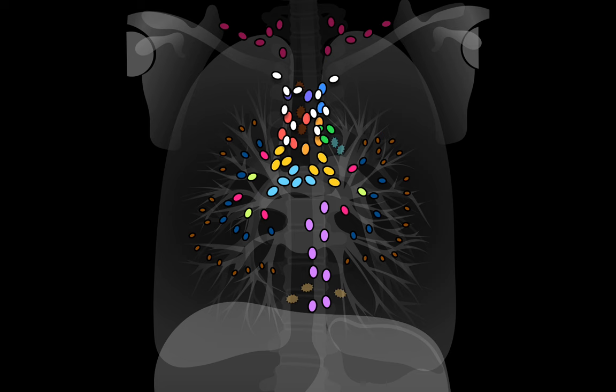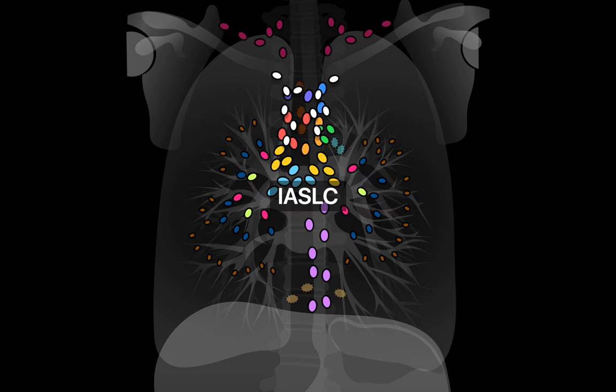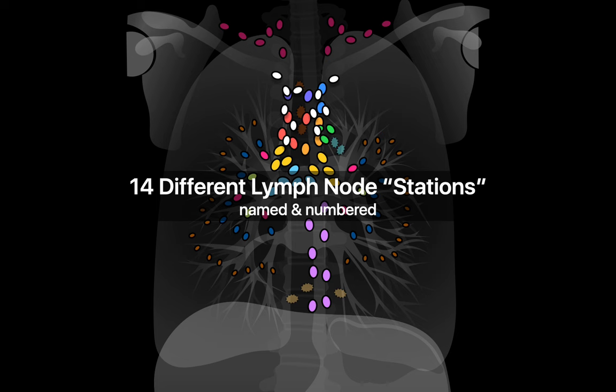The lymph node map we currently use was created over 10 years ago by the International Association for the Study of Lung Cancer, or IASLC. The IASLC lymph node map divides regional thoracic lymph nodes into 14 named and numbered districts, or stations, some of which are subdivided into right and left.